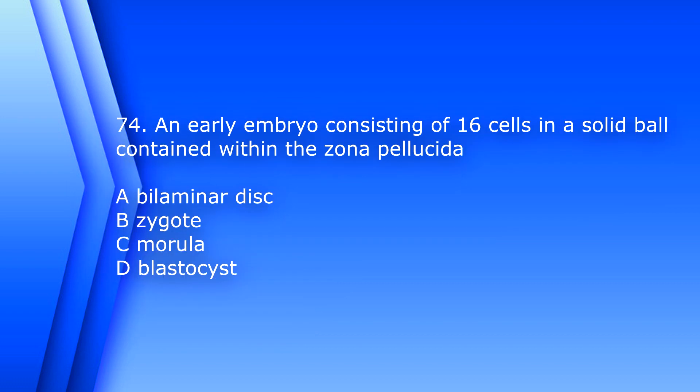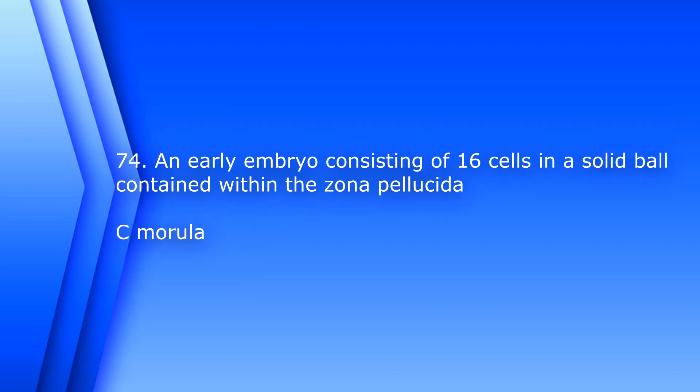Question 74. An early embryo consisting of 16 cells and a solid ball contained within the zona pellucida is a: A. Bilaminar disc, B. Zygote, C. Morula, D. Blastocyst. The answer is C, Morula.